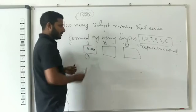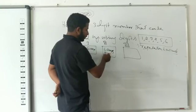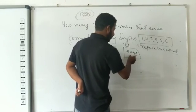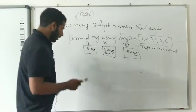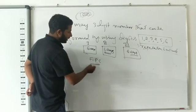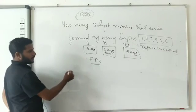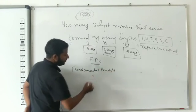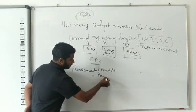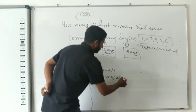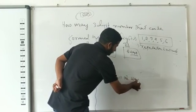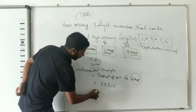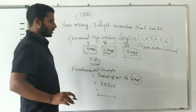So the total number of arrangements is 6 × 6 × 6. According to the Fundamental Principle of Counting — FPC — the answer is the product of all the ways: first place six ways, second place six ways, third place six ways — multiply them together to get the final answer.